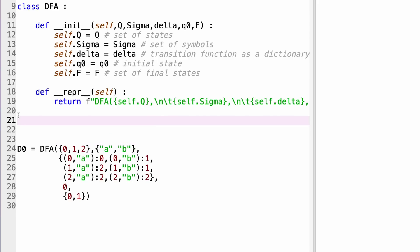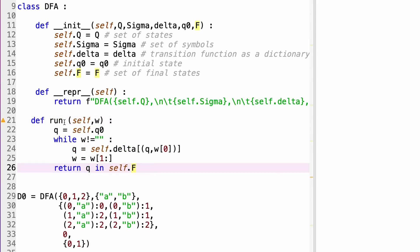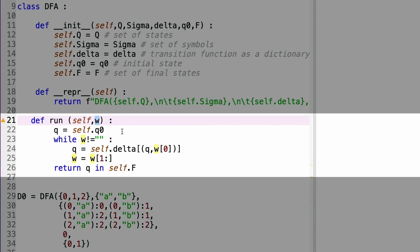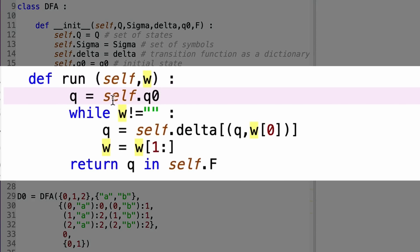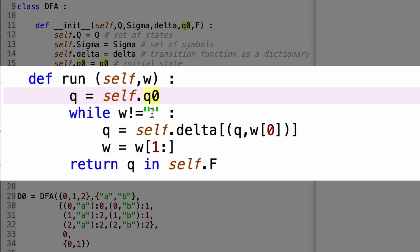So now we have to do something with this automaton. So let's implement a run function. Here's a word, which I just use a string to represent. So initially my state is the initial state. And then I'm going to eat the word. So while the word is not empty, I'm using my delta to say okay, I'm in state q, I see the first symbol of the string, and I'm going to go into a new state and assign it to q again.